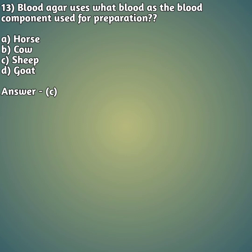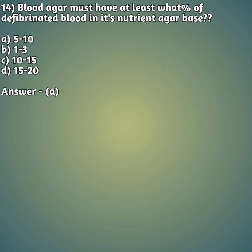Our thirteenth question: blood agar uses blood from which animal for its preparation? Option A: horse, option B: cow, option C: sheep, option D: goat. The right answer is option C — sheep blood is used for the preparation of blood agar.